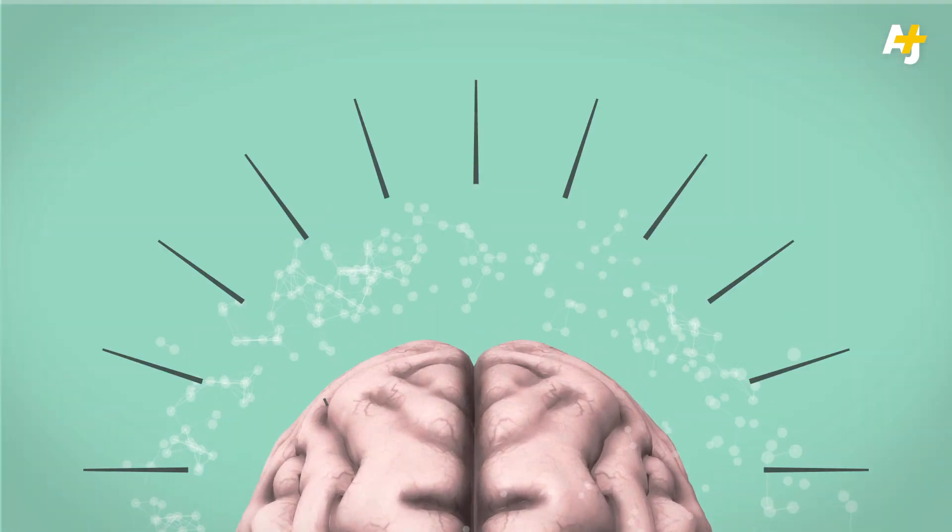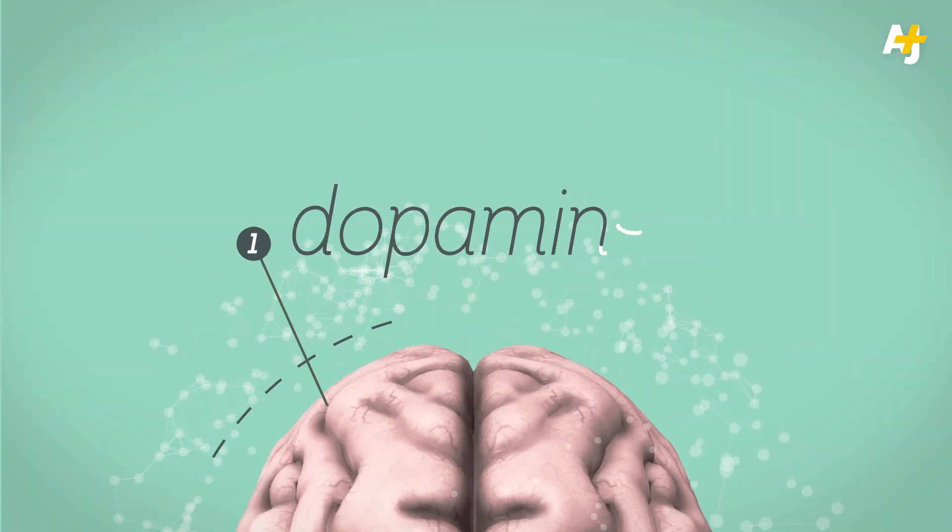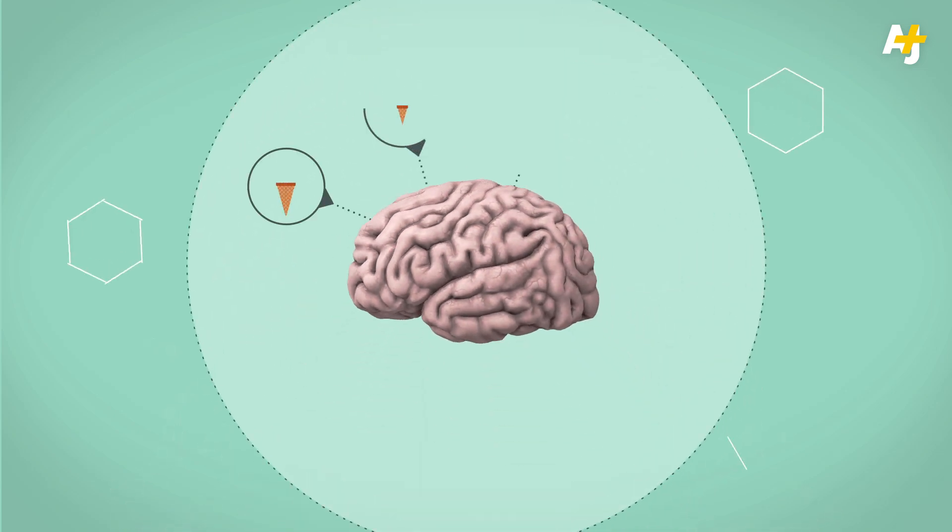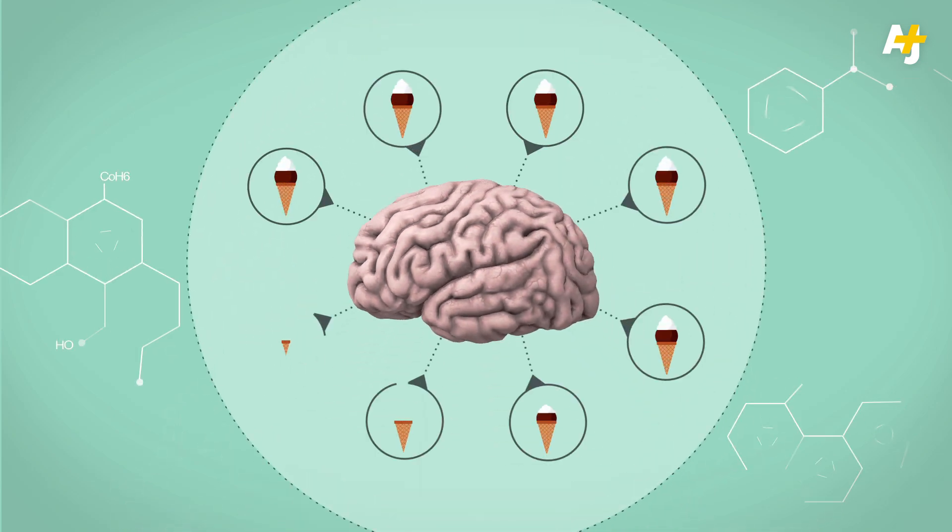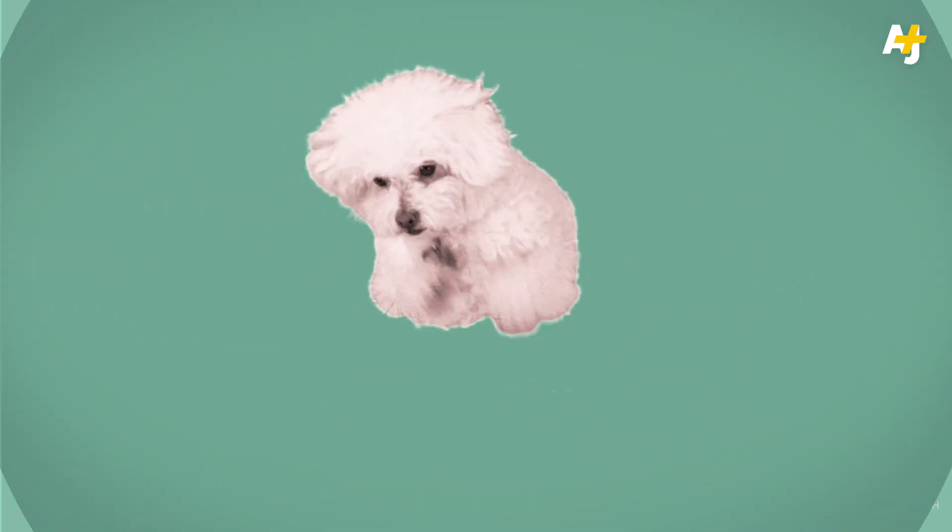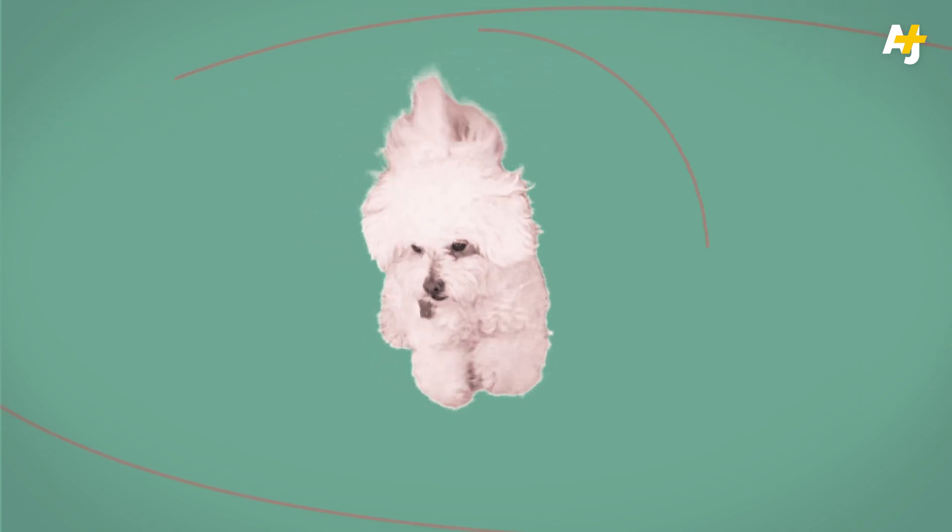but when it comes to addiction, the most important one is called dopamine. Dopamine makes us feel good, so we want to do that thing again and again. Basically, our brain is training us like we'd train a new puppy.